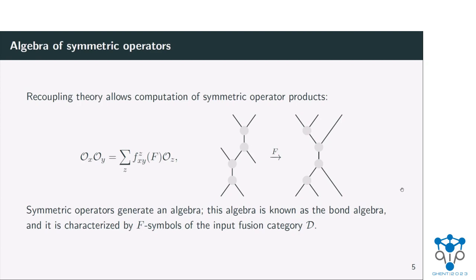Q: If you look at Kramers-Wannier in the classical picture mapping 1+1D to 2D, the duality comes from looking at the Ising model on the dual graph. When going to higher dimensions, can you give an example? A: In 2+0D or 1+1D, Kramers-Wannier can be a self-duality because the dual graph is still a square lattice. In higher dimensions this is not true — the generalization of Kramers-Wannier in 2+1D would be a duality between the 2+1D Ising model and a Z2 gauge theory living on the edges. In this sense it can never be self-dual: one has a global symmetry, the other has a one-form symmetry. In 2+1D it's very hard, if not impossible, to find self-dual models, but if you go up one more dimension it might happen again.